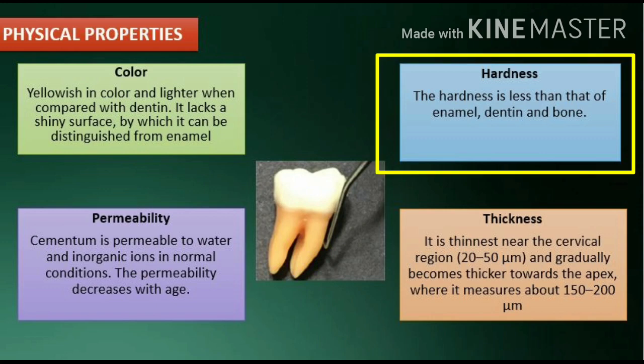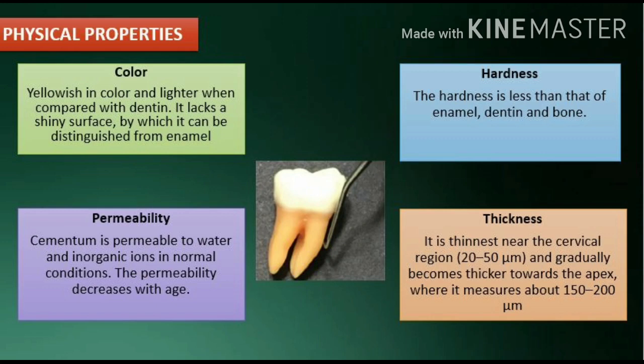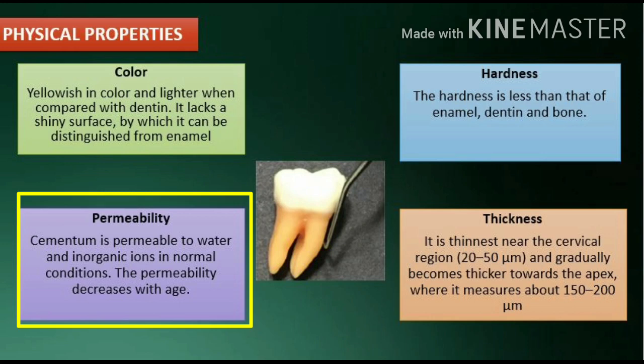Hardness: the hardness is less than that of enamel, dentin, and bone. Permeability: Cementum is permeable to water and inorganic ions in normal conditions. The permeability decreases with age.